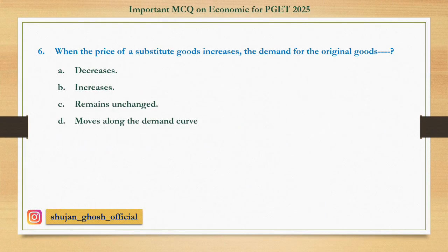Question number six: When the price of a substitute product increases, the demand for the original good — option A: decreases; B: increases; C: remains unchanged; D: moves along the demand curve. Answer: increases.